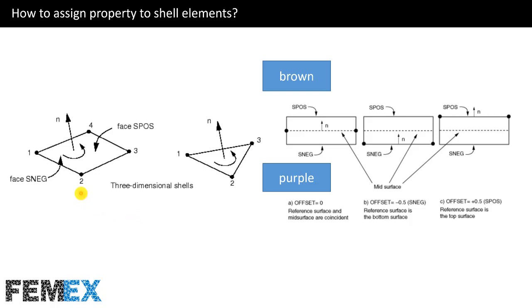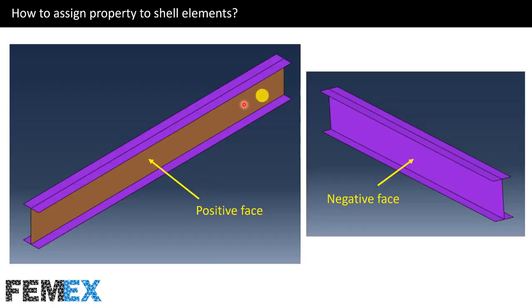Now I want to talk about shell elements and assigning property to them. This is a quadrilateral shell element, and this is a triangular shell element. All shell elements have a normal vector. According to the direction of the normal vector, these elements have a positive face surface and a negative face. This is the positive surface and this is the negative surface. And this construction line is the mid-surface of the shell part or shell element.